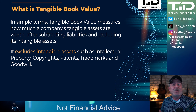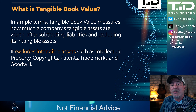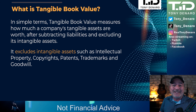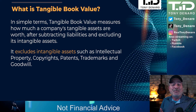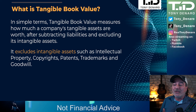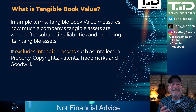Very simply, tangible book value differs from book value in one key way: we exclude the intangible assets when defining tangible book value. As listed here on the slide, those intangible assets that we exclude include intellectual property, copyrights, patents, trademarks, and goodwill.